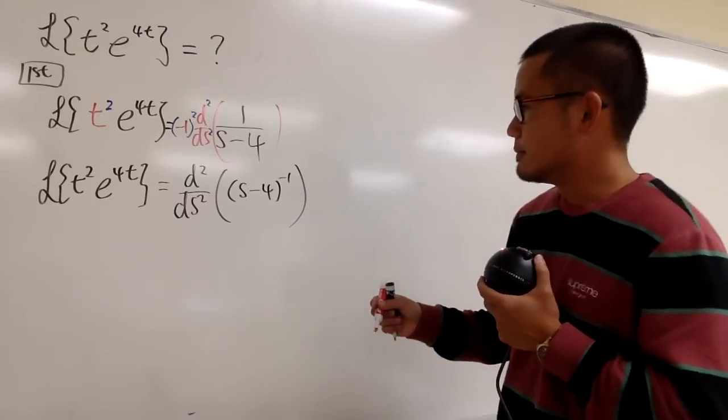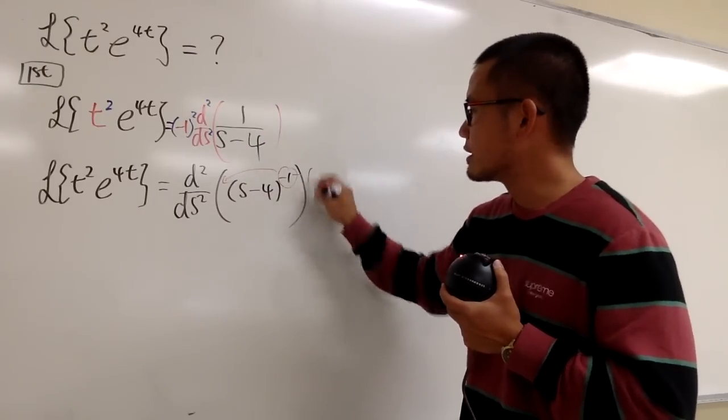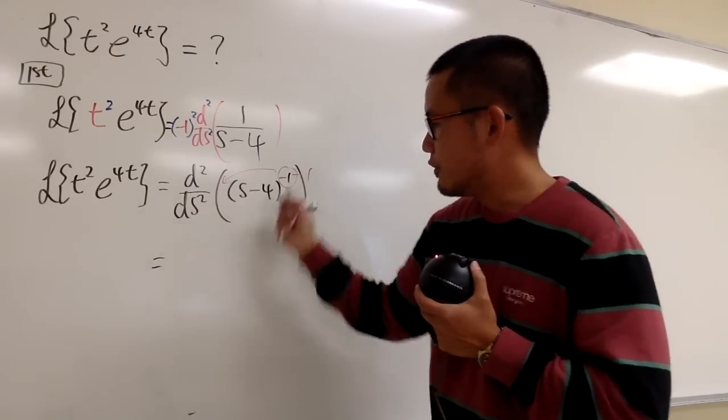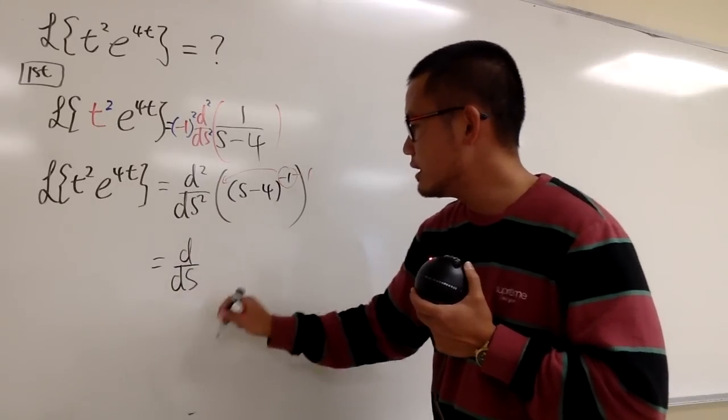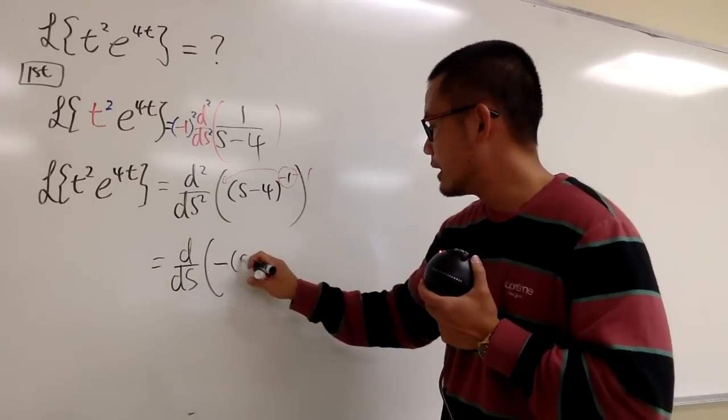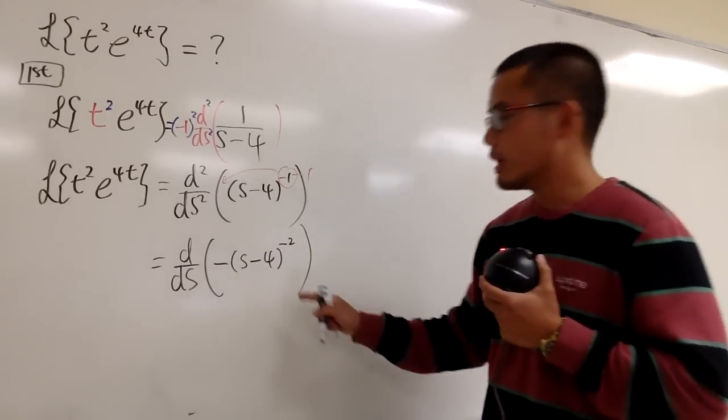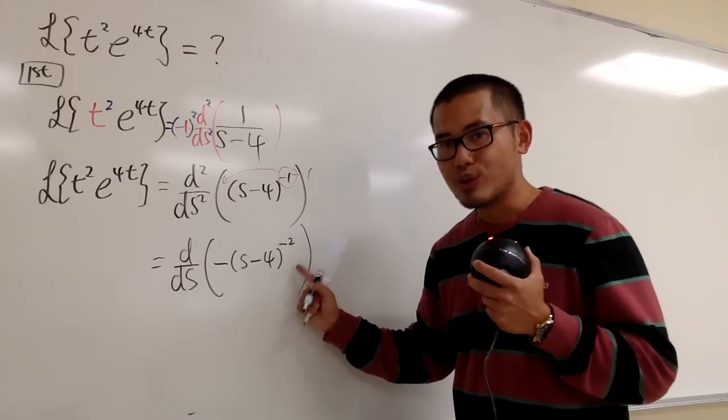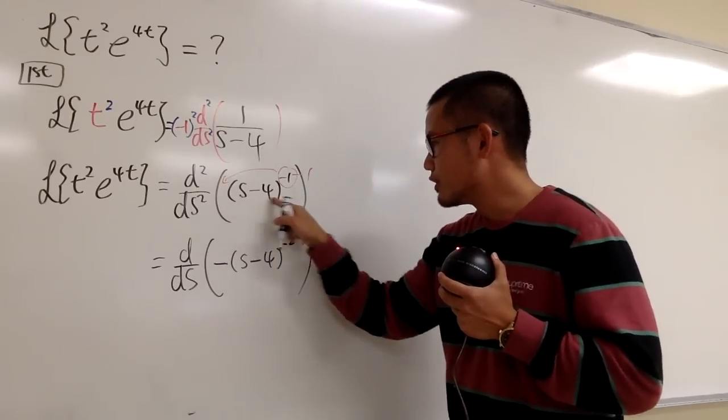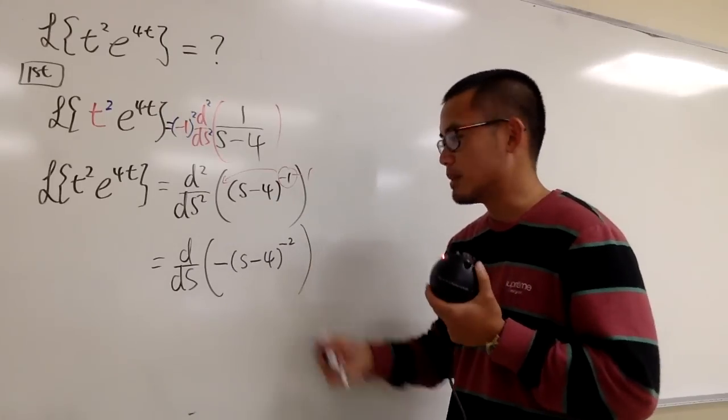All right, do it first. So you bring this to the front, minus 1. So, I differentiate once, so I still have to differentiate it again. So let me put down d ds. The first one, it's going to give me negative and then s minus 4 to the negative 2. And technically, you have to do a chain rule, but the derivative of s minus 4 with respect to s is just 1, so multiply by 1, doesn't matter.